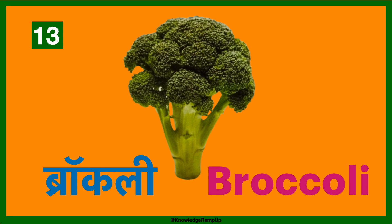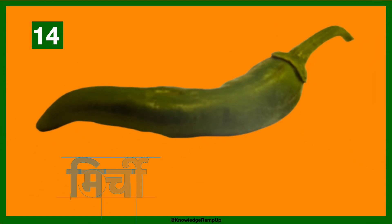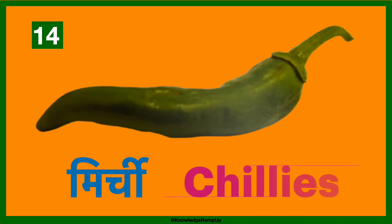Broccoli — the English name is broccoli. Mirchi — it's called chillies in English. It can be green or red in color.